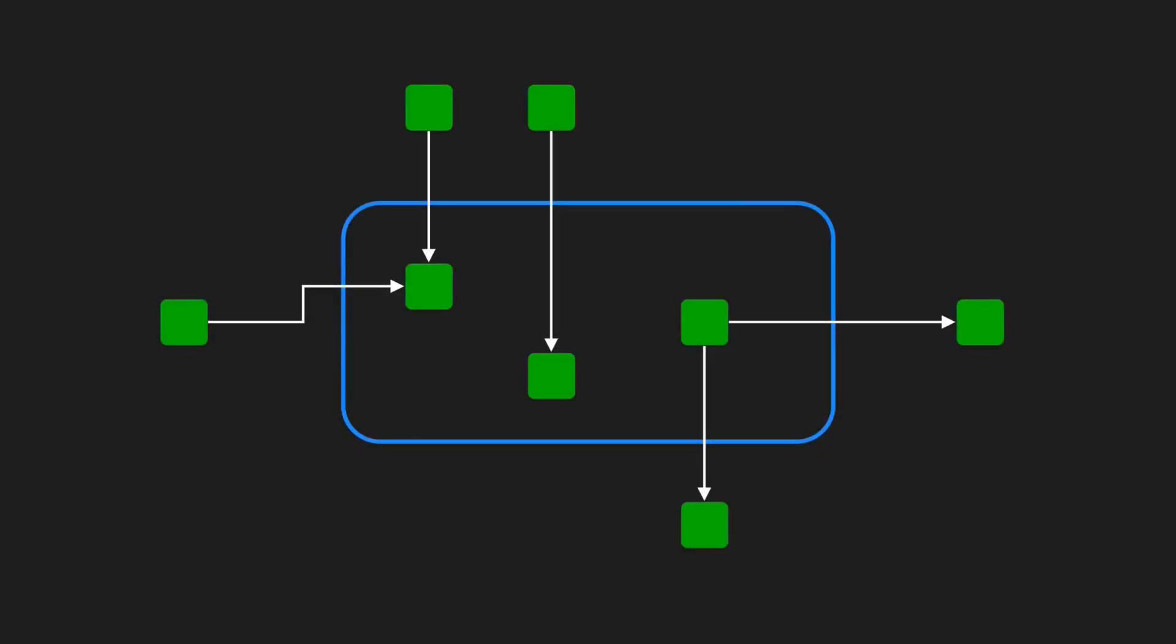Is there a way to quantify or measure the stability of a component? Yes, there is. We count the number of classes outside this component that depend on classes within this component, and we call this number CA, the afferent couplings. We also count the number of classes inside the component that depend on classes outside this component, and we call this number CE, the efferent couplings. Then we can compute the instability metric I by dividing CE by the sum of CA and CE.